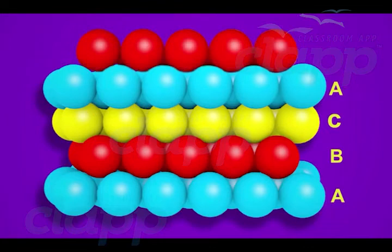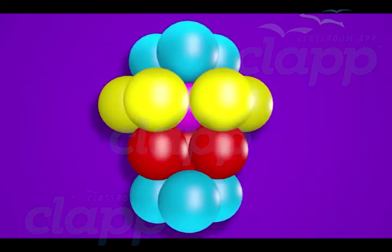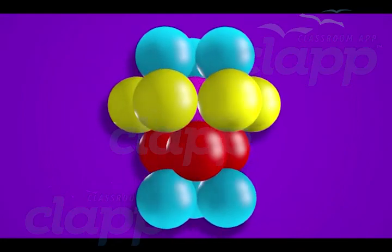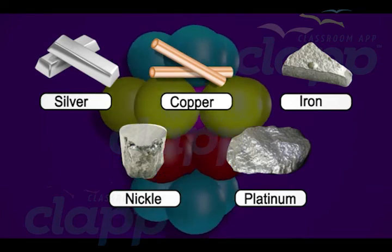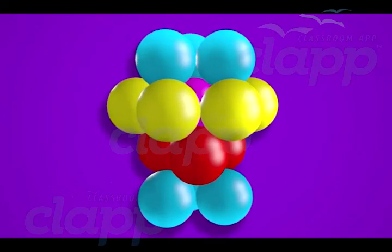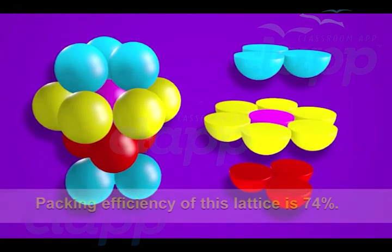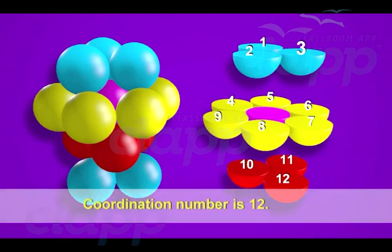Similarly, the fifth layer aligns with the second layer and is named B type, and so on. This type of arrangement follows an ABC ABC pattern and is called the cubic close-packed (CCP) or face-centered cubic (FCC) structure. Examples include silver, copper, iron, and nickel. This packing is very efficient with a packing efficiency of 74%, and each sphere is in contact with 12 nearest atoms, giving a coordination number of 12.